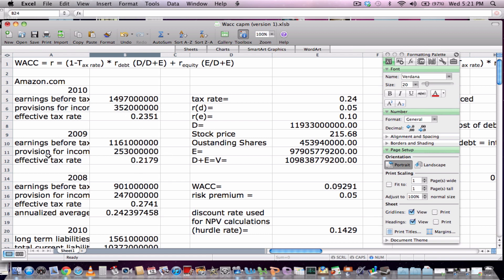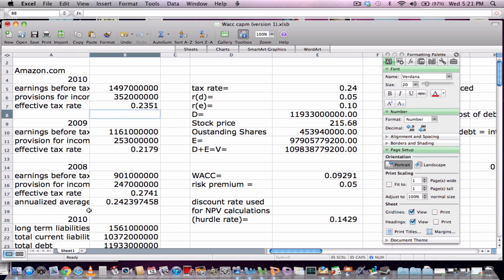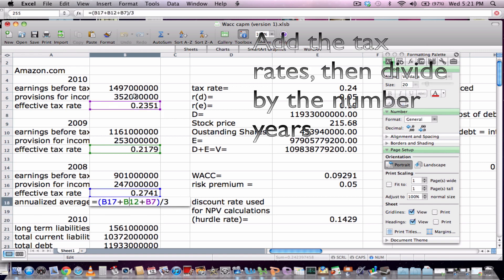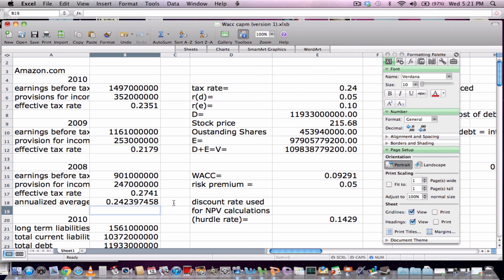But for simplicity's sake, we'll do the past three years. Now, to find the effective tax rate, you simply divide the provisions for income taxes by the earnings before taxes to get the effective tax rate. And then the annualized average is the three tax rates for these three years divided by three to get the average.